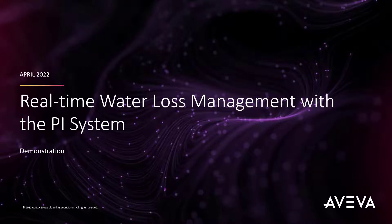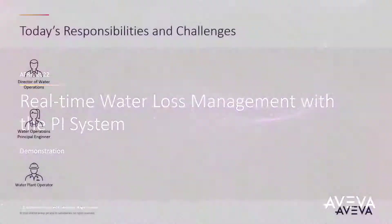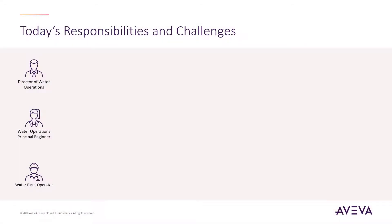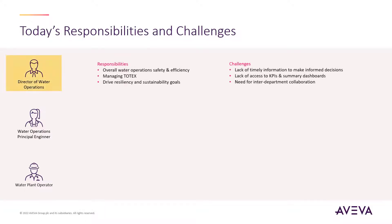This demonstration will showcase how PI Vision allows for the monitoring of water losses throughout a city. The modern enterprise has many challenges when visualizing flows throughout a water distribution network. The director of water operations must strive for operational excellence across all sites, ensuring operations are safe, efficient, and sustainable — challenging without timely information from all departments.